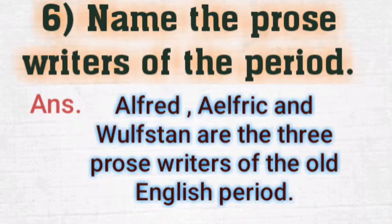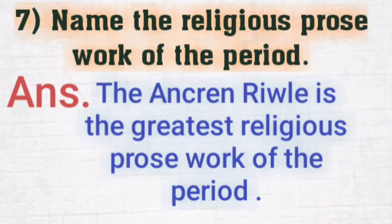Question 6: Name the prose writers of the period. Alfred and Wulfstan are the prose writers of the Old English period. Question 7: Name the religious prose work of the period. The Ancrene Riwle is the greatest religious prose work of the period.